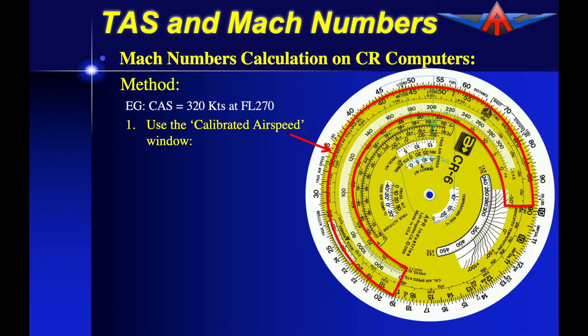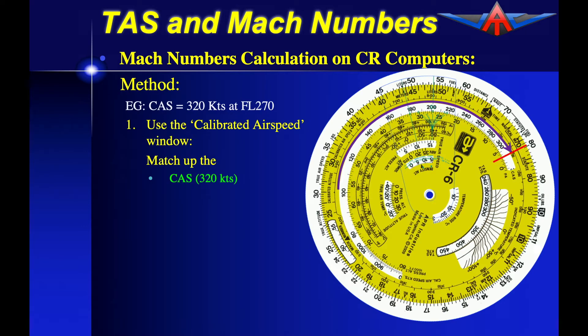We're going to use the calibrated airspeed window. This looks virtually identical on the Jeppesen CR3. We need to match up the calibrated airspeed which is inside this white section and we're looking for 320 knots.